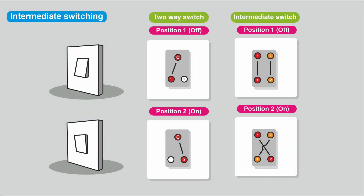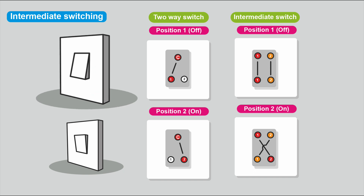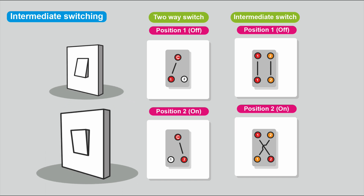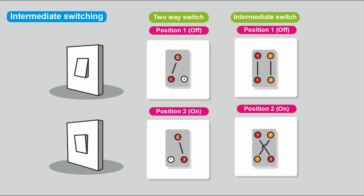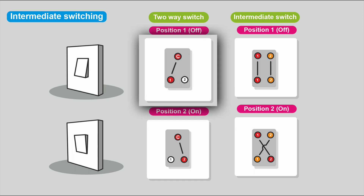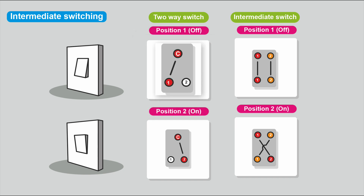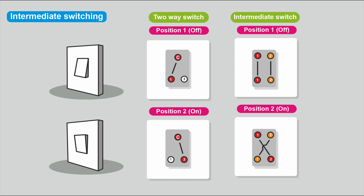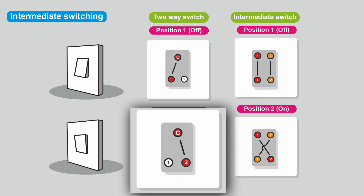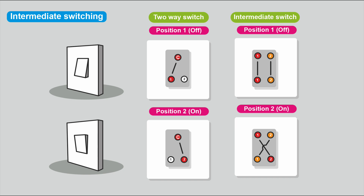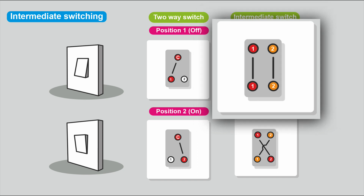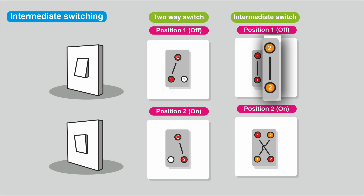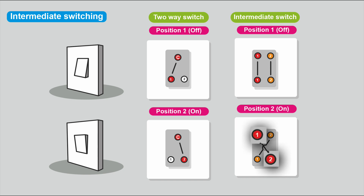These are the two-way switches and intermediate switches we'll be using. When the switch is in the off position and flicked over, it'll be on. When all switches are in the off position the light should be off; when all are on, the light should be on. In the off position, power goes from common to L1. When switched on, power goes from common to L2. The intermediate switch in position one goes one-to-one and two-to-two; in position two it's crossed over, going one-to-two and two-to-one.